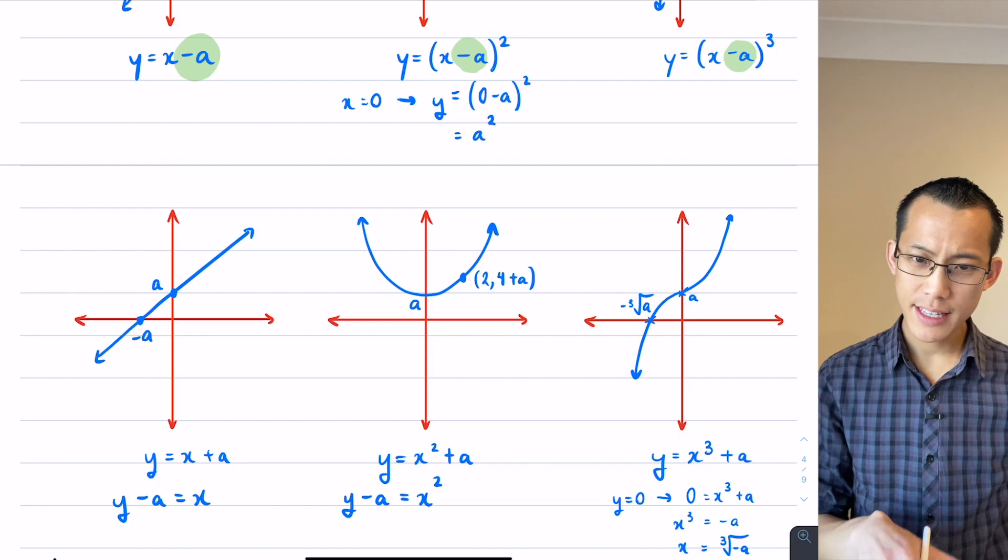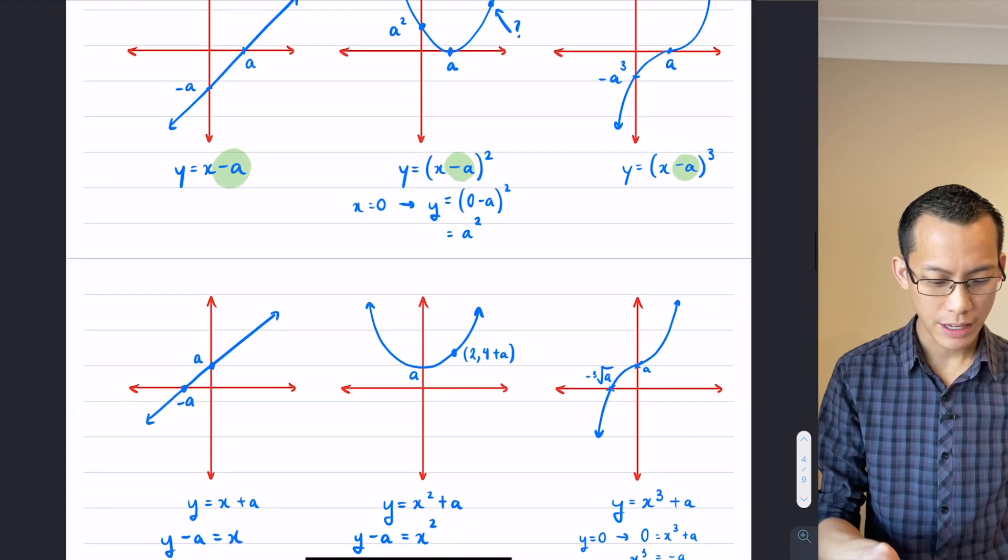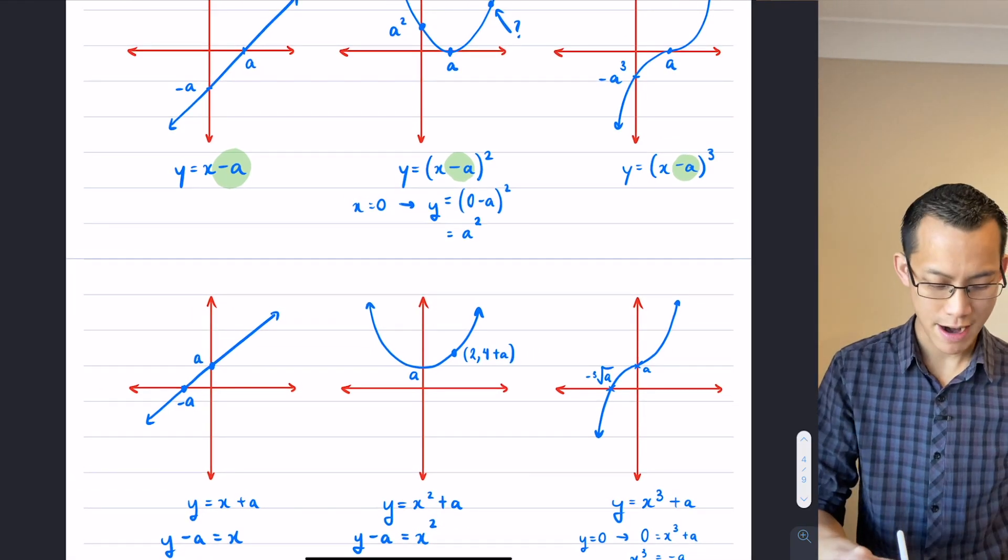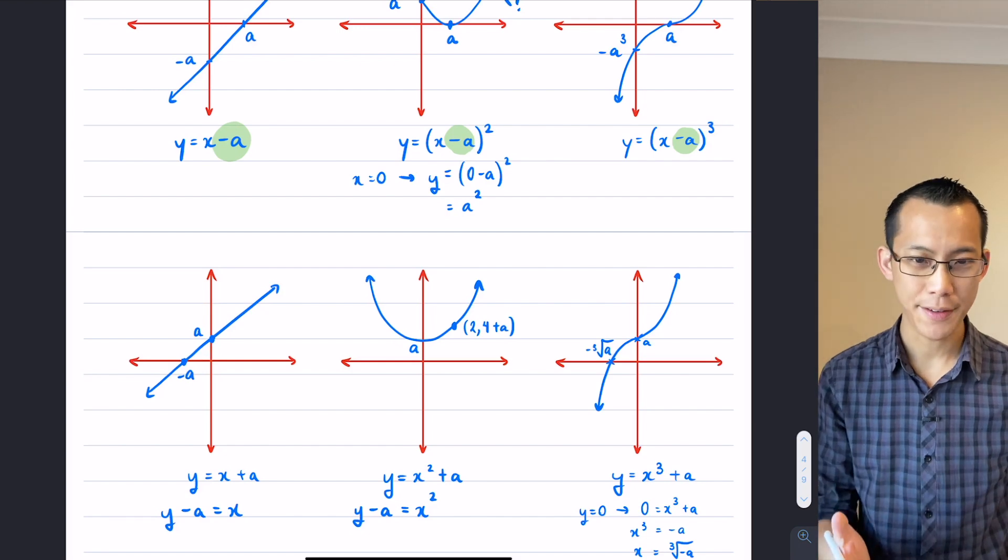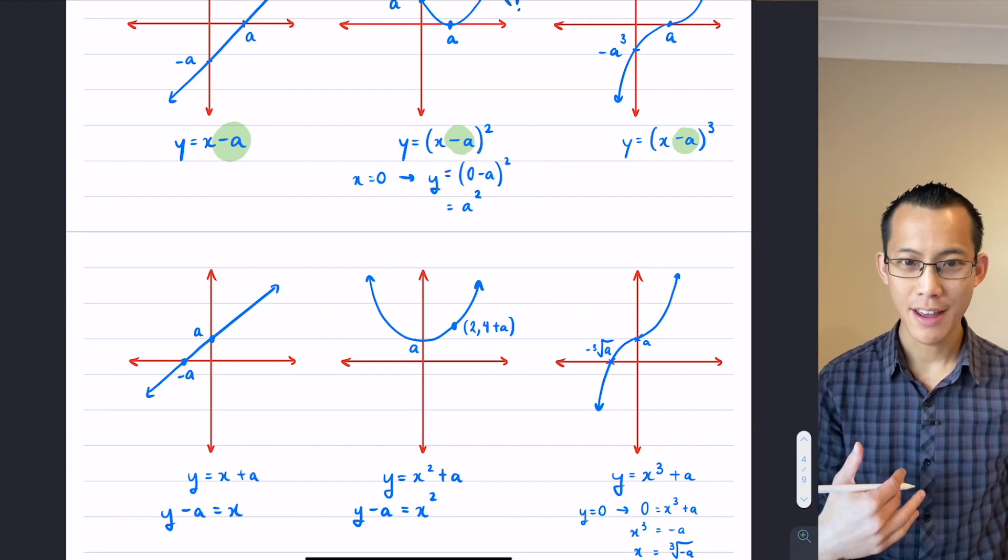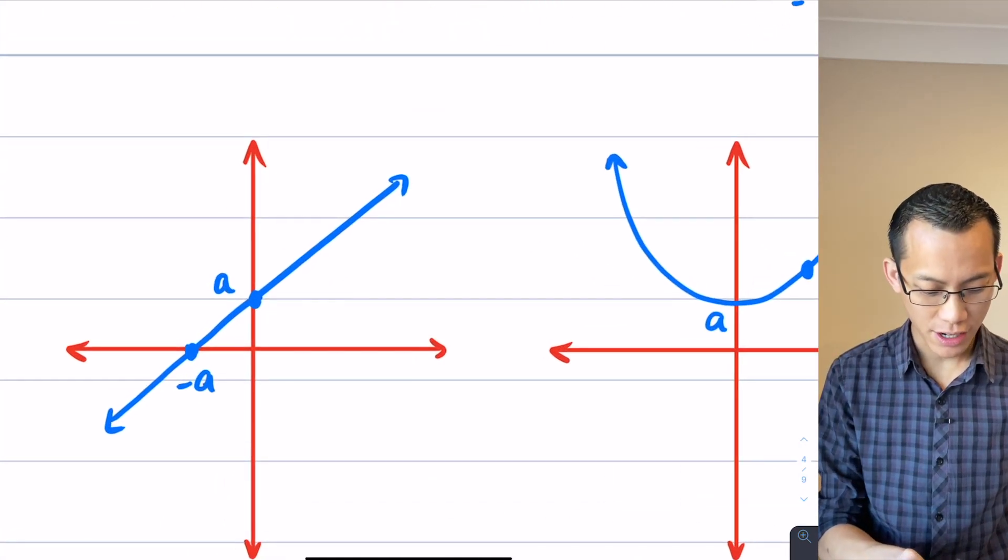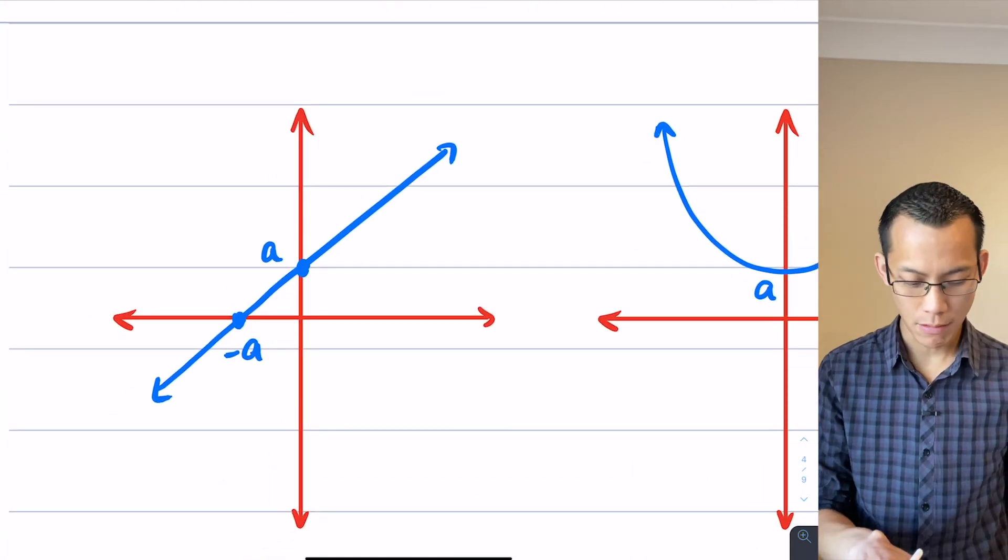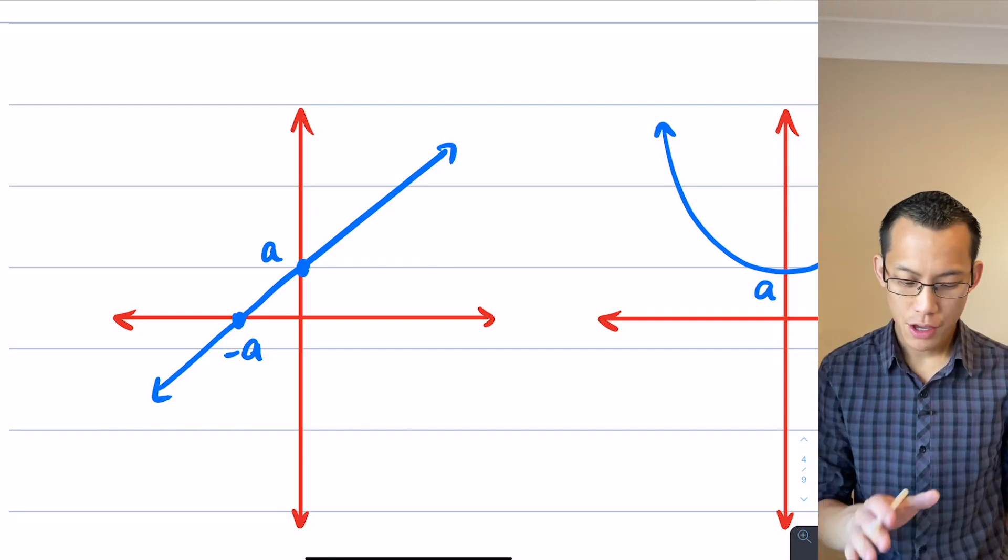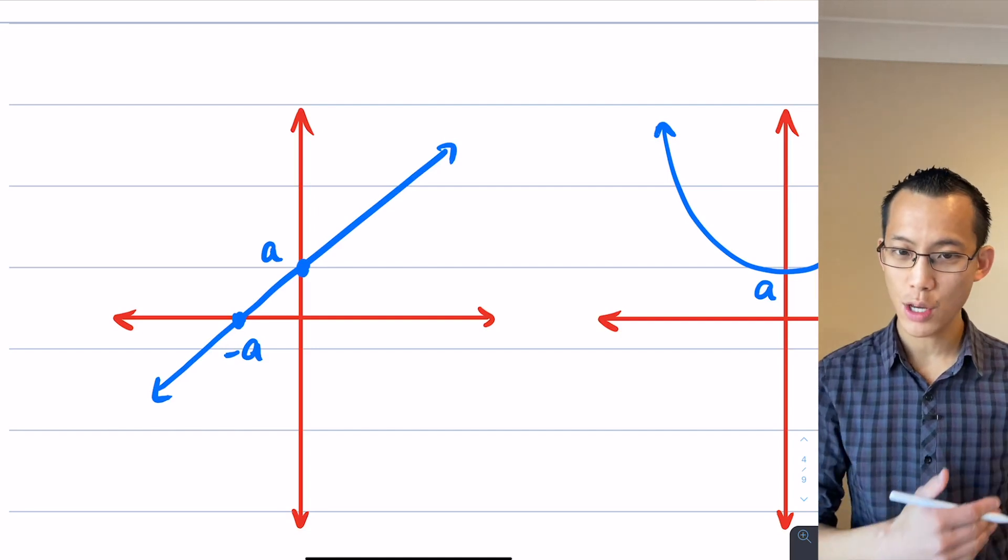But hold on a second. Isn't this the same as the graph we were looking at before, but moved the other way? Well, in the case of linear graphs, a move up or down actually is equivalent to a move left or right. You can actually see it here. You can imagine this as, if I didn't tell you what the equation was, you could have started from y equals x and slid this over to the left.